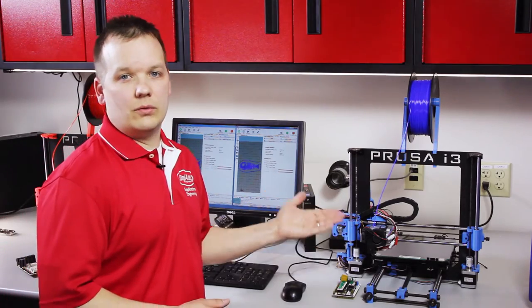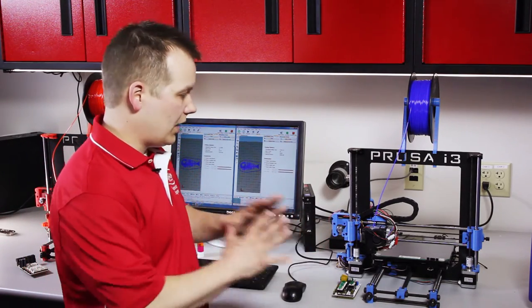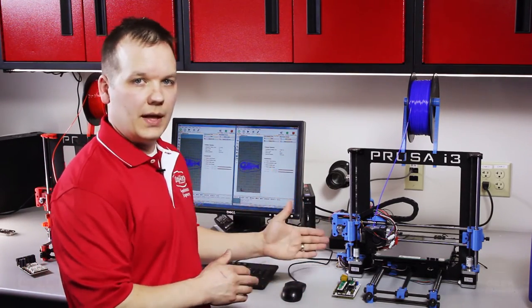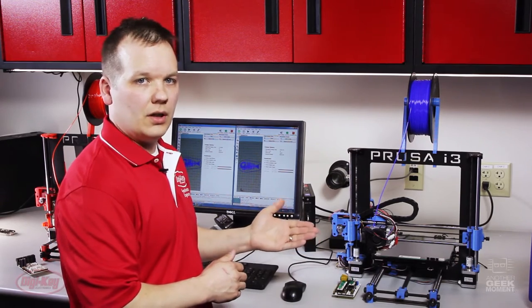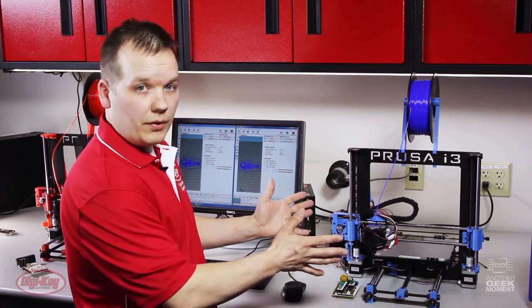This printer is what you get when you buy the kit. This is straight out of the kit, it has an Arduino Mega, a standard RAMS board, it runs Marlin firmware, nothing wrong with it.